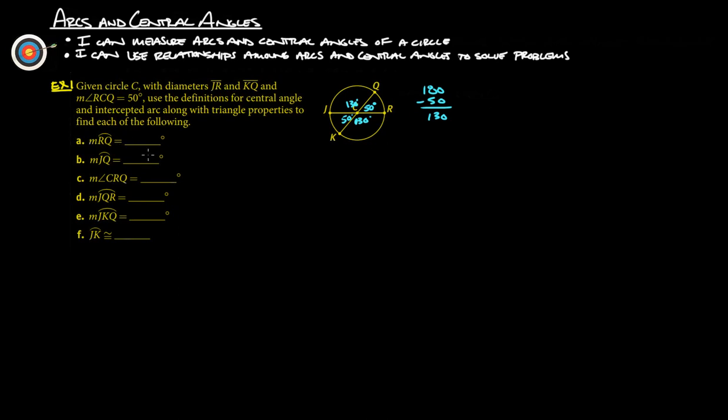So now we've got all the angles in there. Now we should be able to figure this out pretty quick. Measure of arc RQ, so R to Q, 50 degrees. J to Q, so from J around to Q, we figured out already, is 130 degrees. A measure of angle CRQ, C to R to Q.